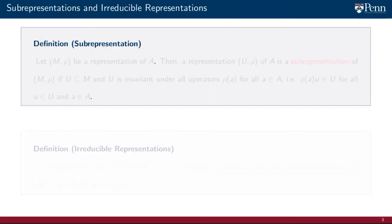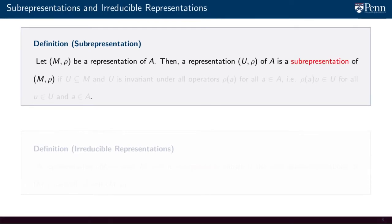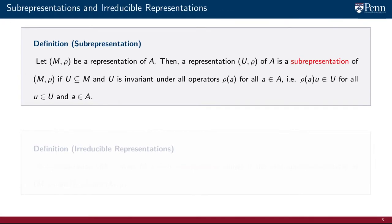Before defining irreducibility, we require to formally define sub-representations. Let M, Rho be a representation of the algebra A. Then a representation U, Rho of the same algebra A is a sub-representation of M, Rho if the space U is contained in the space M and U is invariant under the action of Rho — that is, any filtered element of U is again in U.